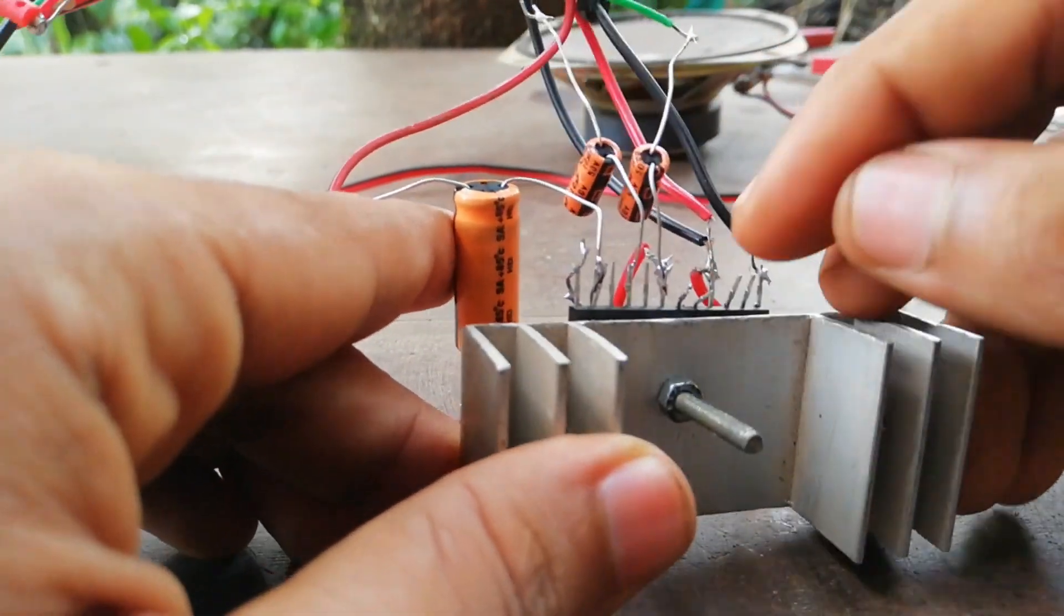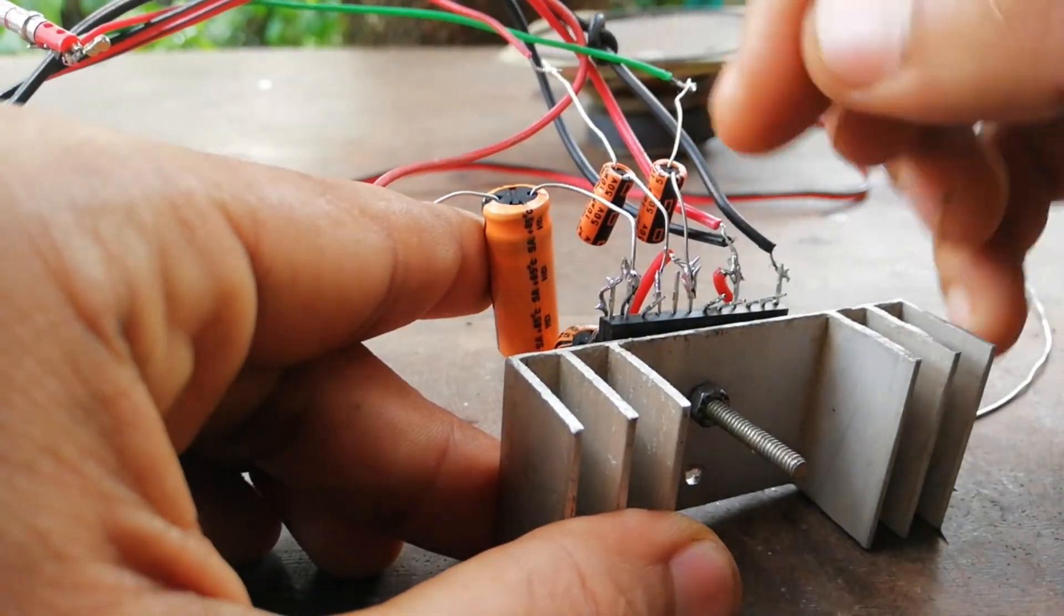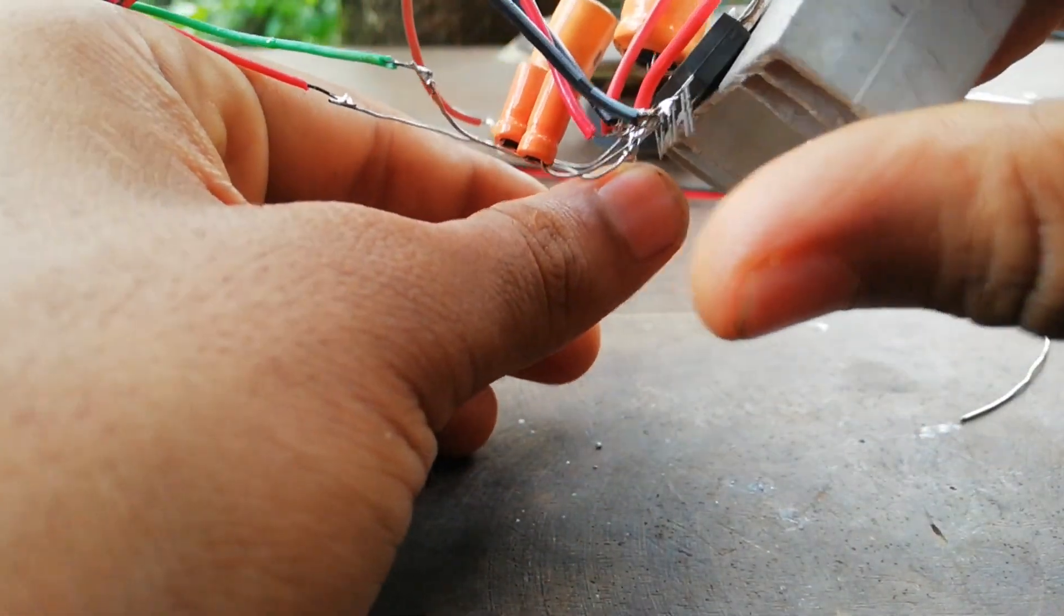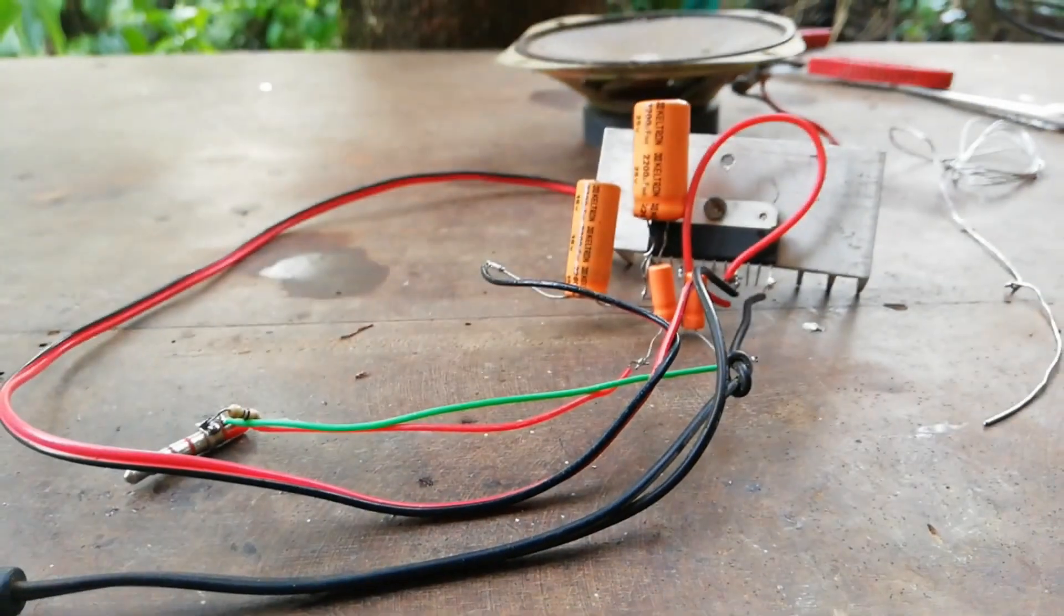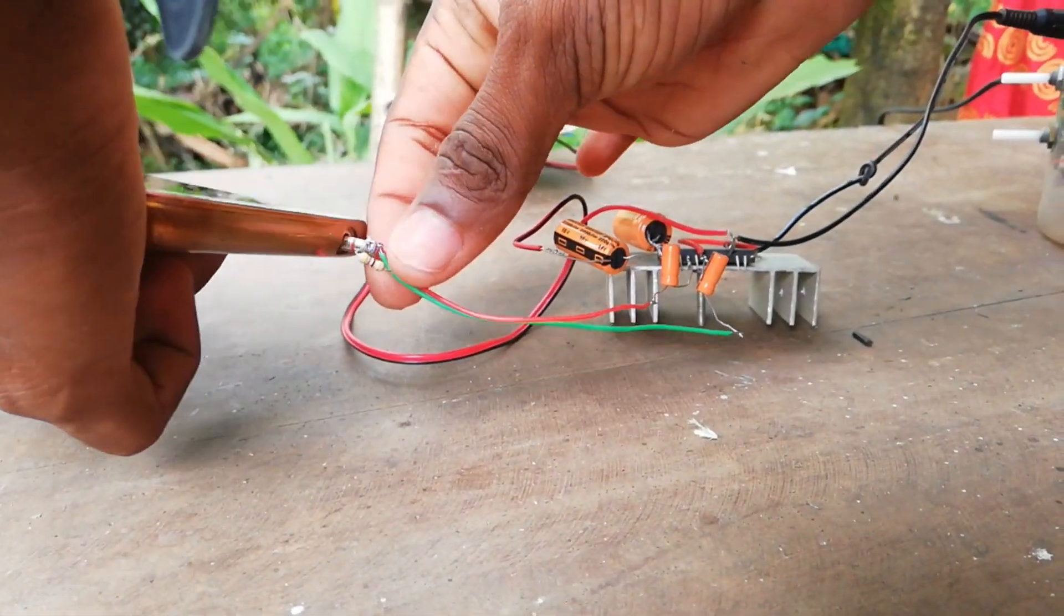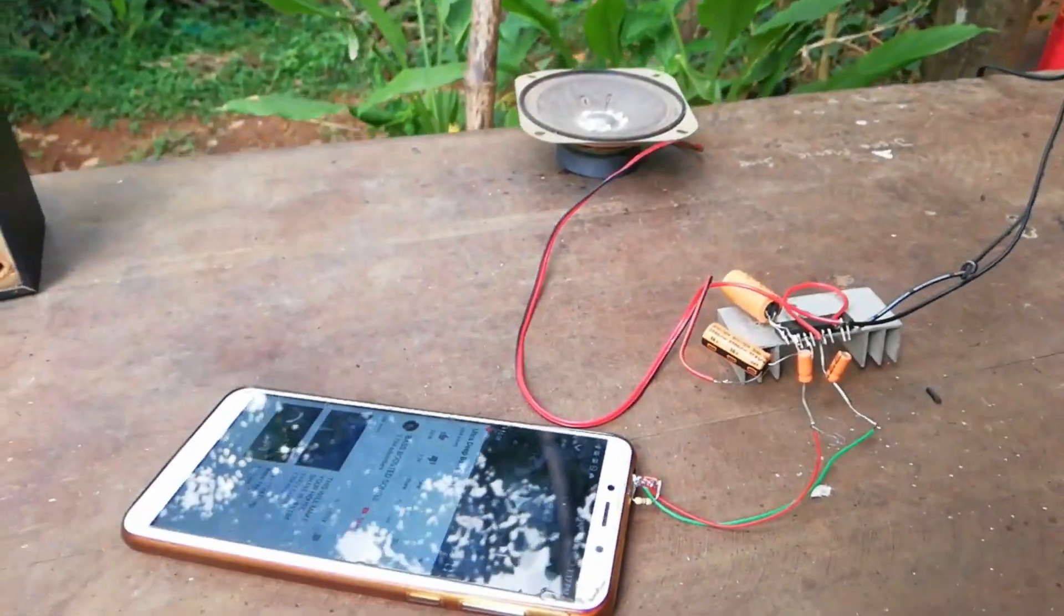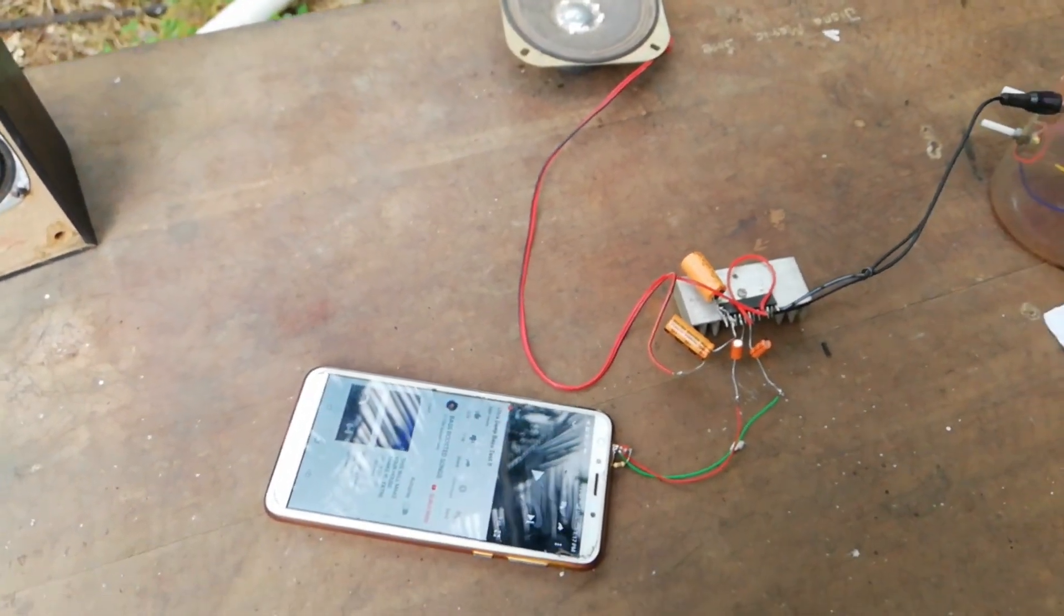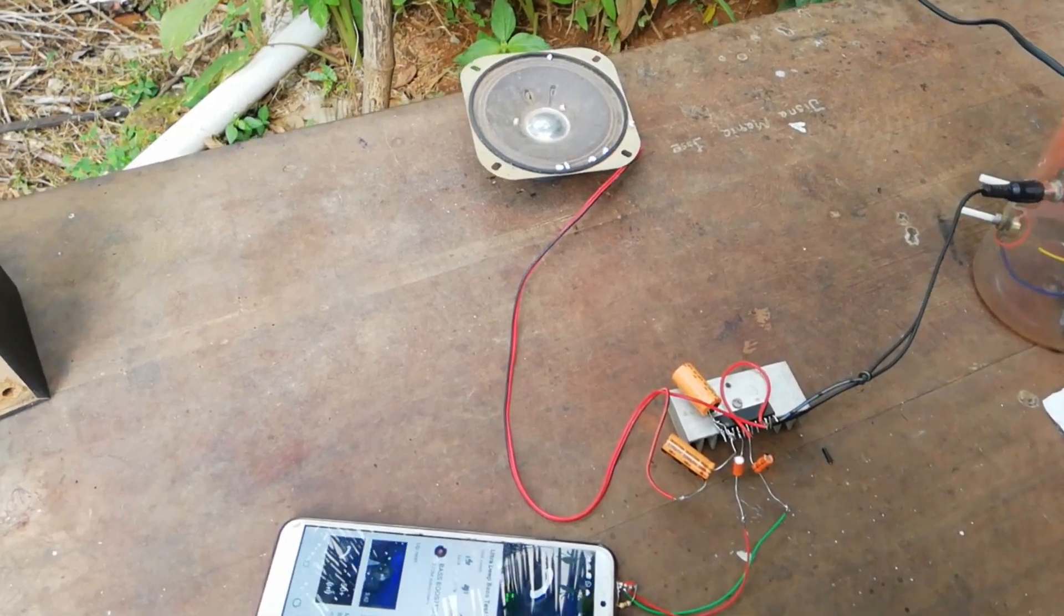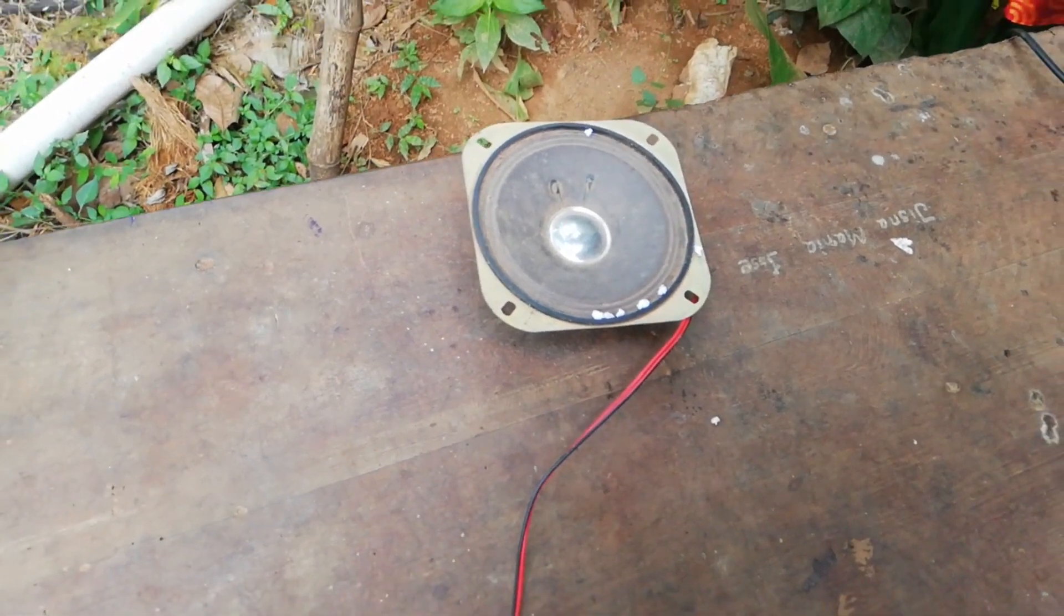Then you can start with the entire pin. You can set the amplifier. You can put it in the best case. The audio jack is connected. Now we can play from the phone. Now we can play the audio and the speaker will work.